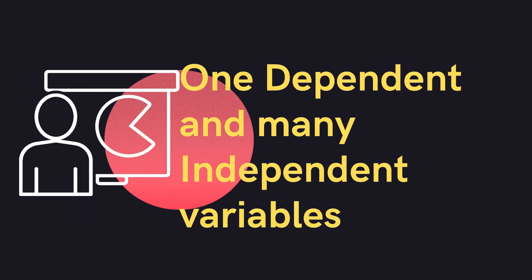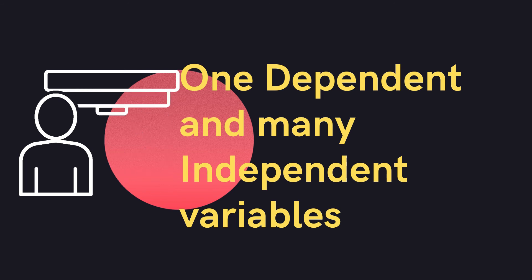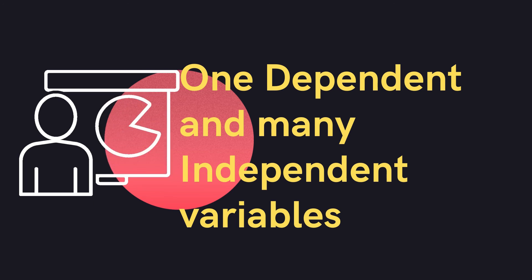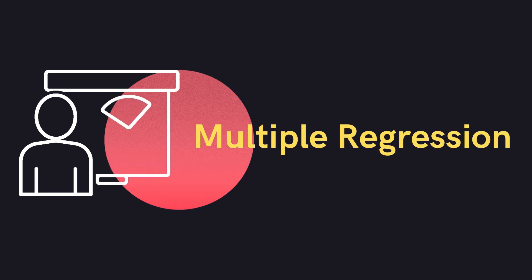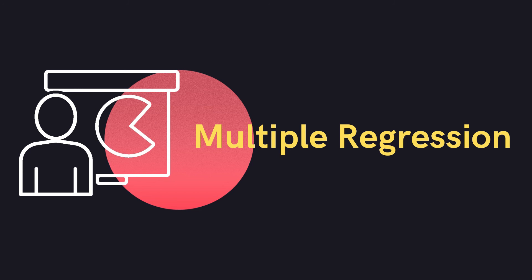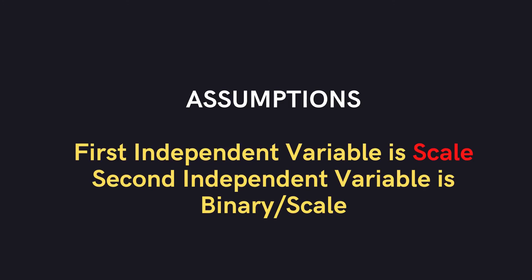We now consider statistical tests where there is just one dependent variable and more than one independent variable. We go for multiple regression when there is one dependent variable and two independent variables — the first independent variable is scale, and the second can be a binary or scale variable.